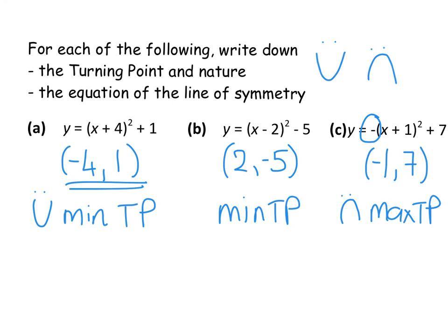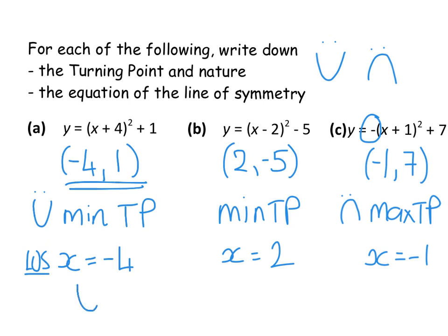The line of symmetry is X equals whatever your X coordinate is. So for the first, line of symmetry is X = -4. For the second, X = 2. For the third, X = -1. The minimum turning point at (-4, 1) sits with the line of symmetry going through -4 on the X axis. The minimum turning point at (2, -5) has its line of symmetry going through X coordinate 2.